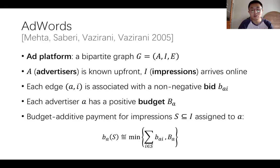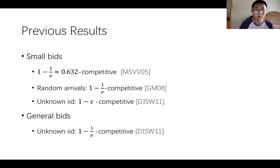The objective is to maximize the total payment among all the vertices. I'll summarize some previous results here. Previous research is mostly under the small bids assumption where an advertiser's bid for any impression is much smaller than its budget.